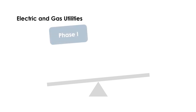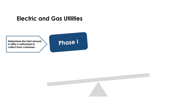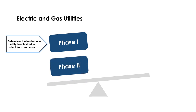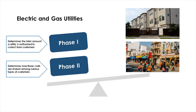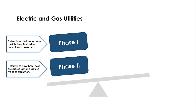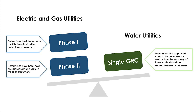For large electric and gas utilities, phase one of a general rate case determines the total amount a utility is authorized to collect from customers, while phase two determines how those costs are shared among various types of customers, such as residential, commercial, and industrial customers. For water utilities, the approved costs to be collected, as well as how recovery of those costs should be shared between customer classes, is done in a single general rate case.